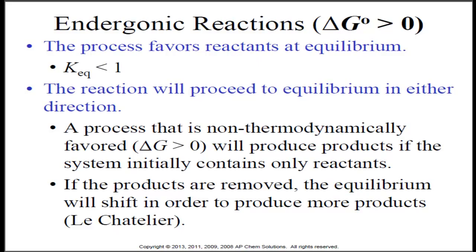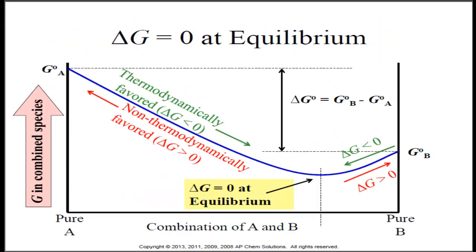When delta G is greater than zero, the process favors the reactants at equilibrium, so KEQ would be less than one. The reaction will still proceed to equilibrium in either direction. A process that is not thermodynamically favored, where delta G is greater than zero, will still produce products if the system initially contains only reactants. If the products are removed, the equilibrium will shift to produce more products. Endergonic means that delta G is greater than zero. At equilibrium, delta G equals zero — the forward and reverse reactions are still taking place, but there is no change in free energy. The system is no longer moving up or down the y-axis; this is the minimum value of the free energy curve, right in the valley.